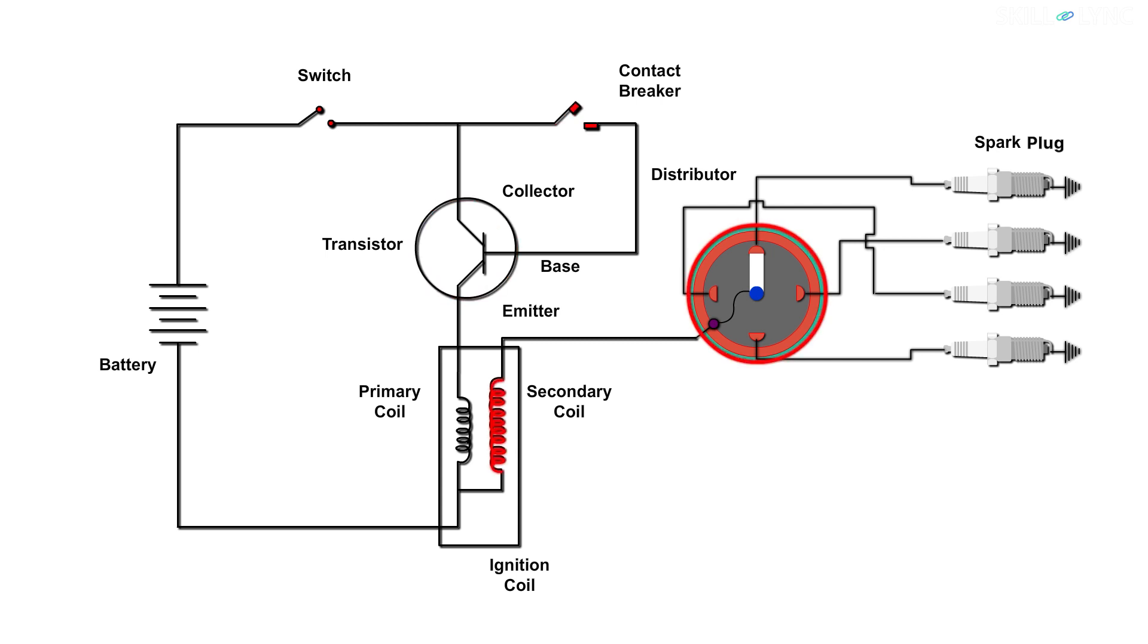On the other hand, one end of the secondary coil is connected to the primary coil and the other end is connected to the distributor. The distributor is then connected with the spark plugs.